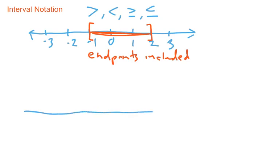We might also want to communicate that they're not included. So let's look at another number line. Let's say you're still interested in the set of numbers that run from negative one to two, but you don't intend to include the negative one and the two. To communicate that, instead of using square brackets, you use round parentheses, and that means that the endpoints are not included.